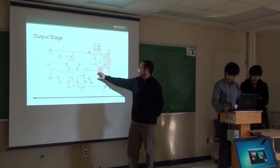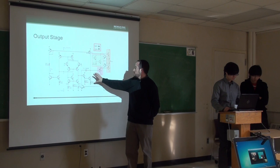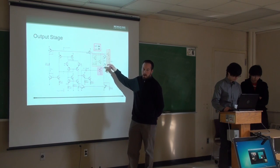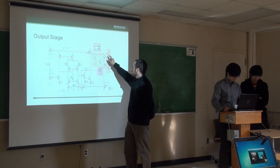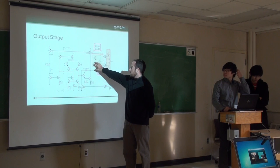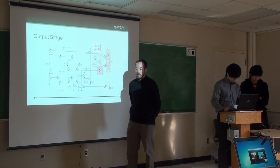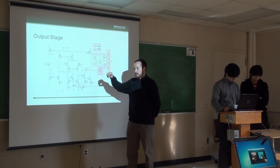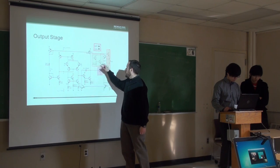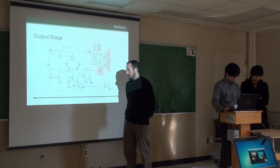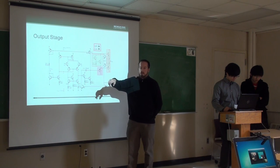For the output stage, another emitter follower or common-collector amplifier provides high impedance so as not to load down the intermediate stage. It then sends its signal to a push-pull complementary pair, or class AB amplifier, where one transistor handles the positive swing and the other handles the negative swing. A Darlington pair acts as two diodes in series, commonly used in class AB amplifiers to provide a smooth transition and eliminate crossover distortion at the zero-crossing level.